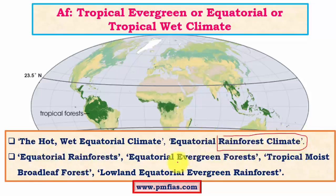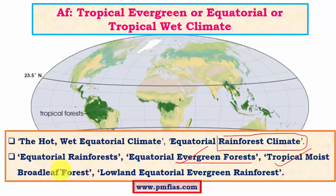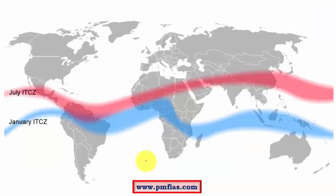It is also called equatorial evergreen forest, because the trees don't shed their leaves all at once due to the climatic conditions. It is also called tropical monsoon broadleaf forest or tropical moist broadleaf forest. In multiple choice questions, terms like 'tropical moist broadleaf forest' may appear, so don't get confused — try to remember these different names.